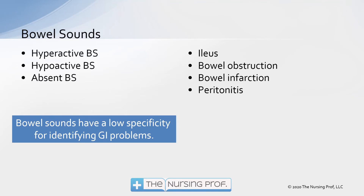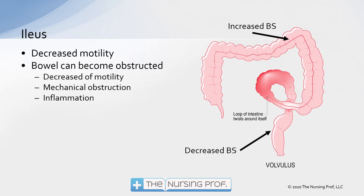With an ileus, we have decreased motility of the bowel. The bowel may be obstructed, or the ileus may be caused by decreased motility from narcotics, slowing the GI system down. The patient may be constipated, with hard stool slowing the entire process. There may also be a mechanical obstruction where the bowel loops over itself, which often occurs in patients with irritable bowel disease or chronic constipation. Inflammation can also cause obstruction — patients with ulcerative colitis or Crohn's disease develop chronic inflammation, leading to swelling and scar tissue formation in the bowel.